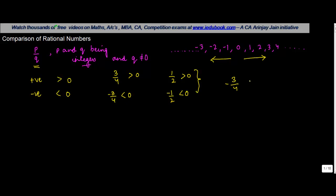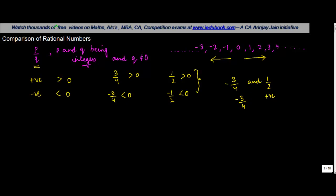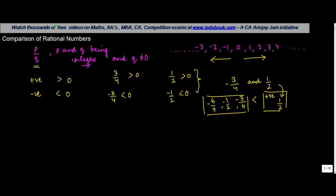So if someone were to give you a comparison of a negative and a positive rational number — for example, compare minus 3 upon 4 and 1 upon 2 — the conclusion is that a positive rational number is always greater than a negative rational number. So 1 upon 2 is always greater than minus 3 upon 4, or any negative rational number is always less than any positive rational number.